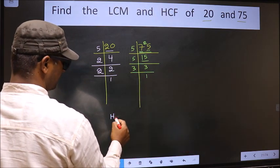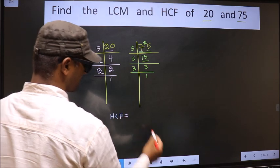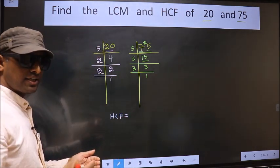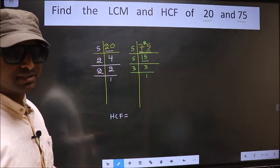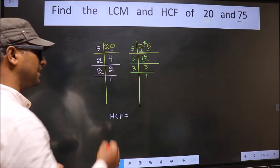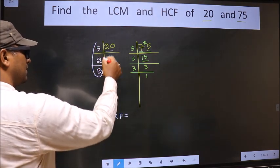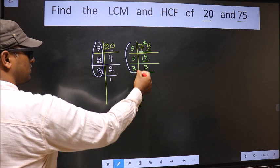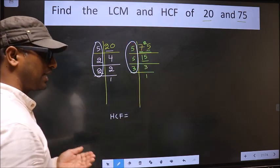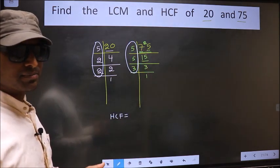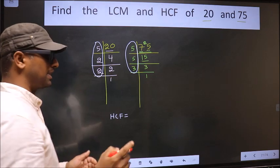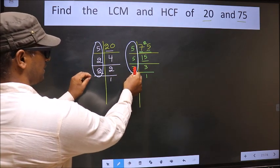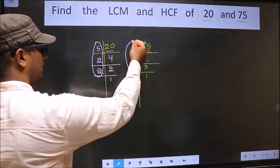Now our HCF is the product of numbers which should be present in both factorizations. I repeat: HCF is the product of numbers present in both places, here and here.